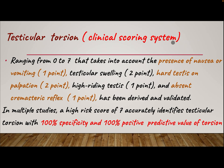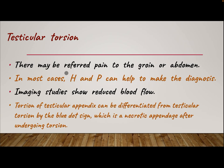The testicular torsion clinical scoring system ranges from 0 to 7, taking into account the presence of nausea or vomiting, testicular swelling, hard testis on palpation, high-riding testis, and absent cremastric reflex. In multiple studies, a high-risk score of 7 accurately identifies testicular torsion with 100% specificity and positive predictive value. There may be referred pain to the groin or abdomen. In most cases, history and physical exam can make the diagnosis. Imaging studies show reduced blood flow. Torsion of the testicular appendix can be differentiated from testicular torsion by the blue dot sign, which is the necrotic appendage after undergoing torsion.